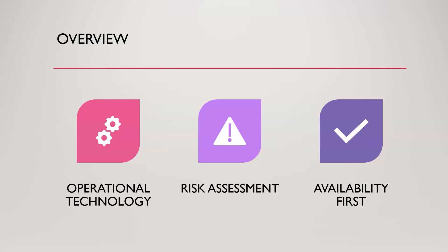OT stands for operational technology. Think about manufacturing — making baby food or pet food, for example. The energy industry keeps the power on so you can flick a light switch or run a refrigerator. Transportation includes semi trucks moving or big ships going into ports. Healthcare covers things like grandma's pacemaker. All of this is considered critical infrastructure.